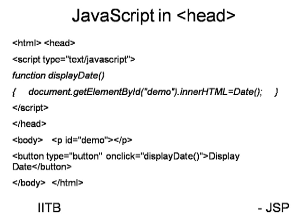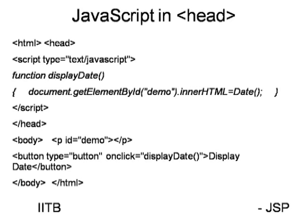In this program, we have one button and one paragraph tag. Initially the paragraph tag is empty. When you press the button, it will invoke the method displayDate, and the date will be displayed in the paragraph tag. This is done with the help of the attribute called innerHTML. The innerHTML is a very important attribute for elements like div — if you want to dynamically change or post content, we can use innerHTML. We take the particular tag using getElementById, then put the date inside it.